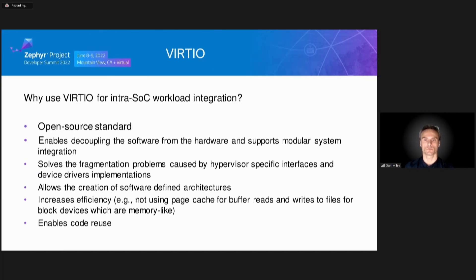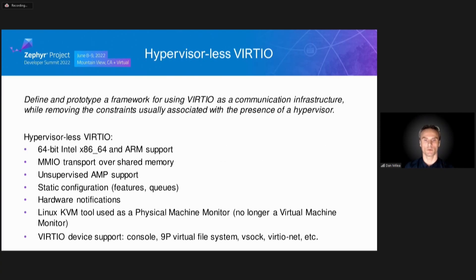Why is VirtIO a good solution for intra-SoC communication? VirtIO is open source. It decouples software from hardware. It solves the fragmentation problems caused by hypervisor-specific interfaces and device driver implementations. VirtIO supports multiple transports, increases efficiency, and is supported by many operating systems. The memory-mapped I/O VirtIO transport is interesting because it takes some of the same checkboxes as our original proof of concept. The MMIO transport can be used both to communicate downwards to an embedded hypervisor, but also to communicate laterally between runtimes deployed on a multi-core CPU SoC. This lateral VirtIO has been labeled hypervisor-less VirtIO.